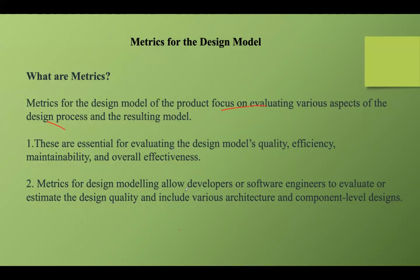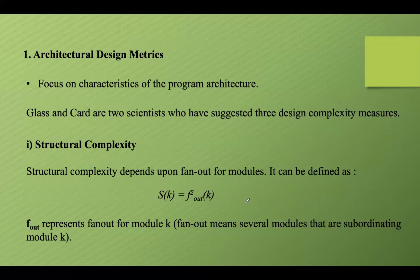These metrics allow developers or software engineers to evaluate or estimate the design quality, including various architecture and component-level designs. Architectural design metrics mainly focus on the characteristics of the program architecture, with an emphasis on architectural structure and effectiveness of modules or components. Card and Card proposed a set of complexity measures to better understand and manage software complexity, particularly in object-oriented systems. These measures can be categorized into three main types: structural complexity, data complexity, and system complexity.